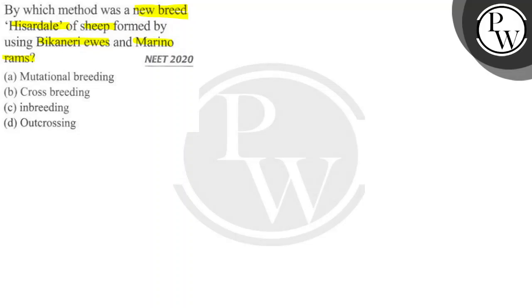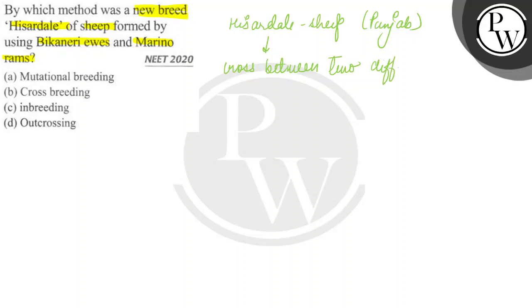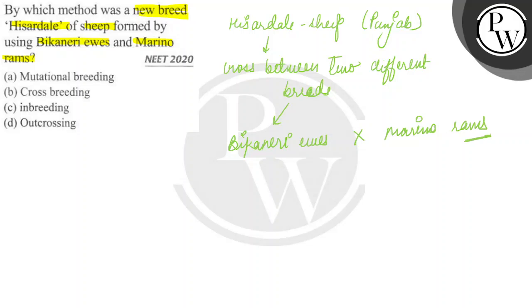Question में हमसे क्या पूछा गया है कि एक new breed बनाई गई — Hissardale, sheep की breed है — by using Bikaneri ewes and Merino rams. हमें बताना है कि इनमें से कौन सा method यूज हुआ था। यह जो Hissardale sheep है, यह पंजाब में बनाई गई थी, और यह बनी है by cross between two different breeds, जो कि Bikaneri ewes और Merino rams हैं। अगर हम definition पर focus करें — जब cross कराया जाता है दो different breeds के बीच में, तो उसे हम कहते हैं cross breeding.